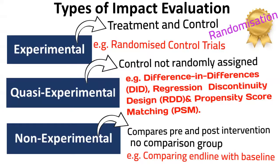Without a control group, non-experimental methods cannot control for various factors affecting the intervention, such as community contextual factors and other selection biases. So while selecting an impact evaluation approach, the first choice should be the experimental design, followed by the quasi-experimental design, and then finally the non-experimental design.